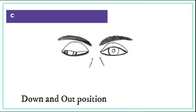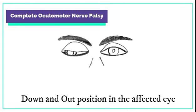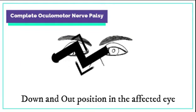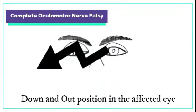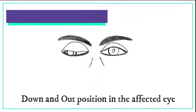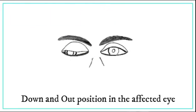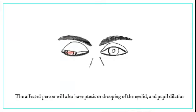A complete oculomotor nerve palsy will result in a characteristic down and out position in the affected eye. Moreover, the affected person will also have ptosis, or drooping of the eyelid, and pupil dilation.